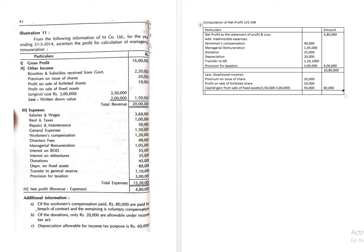So the total disallowed income is 80 thousand. Deducting this from 10 lakh 80 thousand gives 10 lakh as the net profit for managerial remuneration under Section 349. This is how the calculation is done. Apart from the computation of net profit under Section 349, there is a specified format involved. You can either memorize the format or solve it through understanding the problem. Thank you, and we shall see you in the next class.